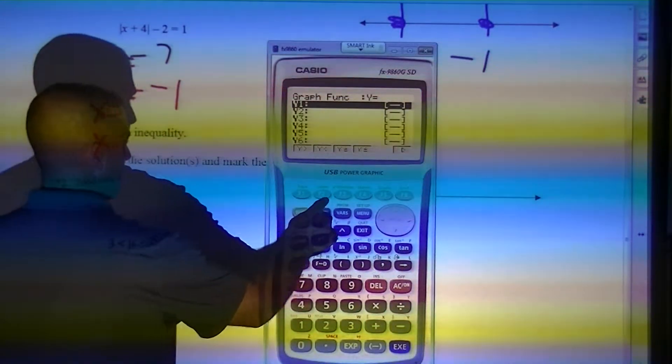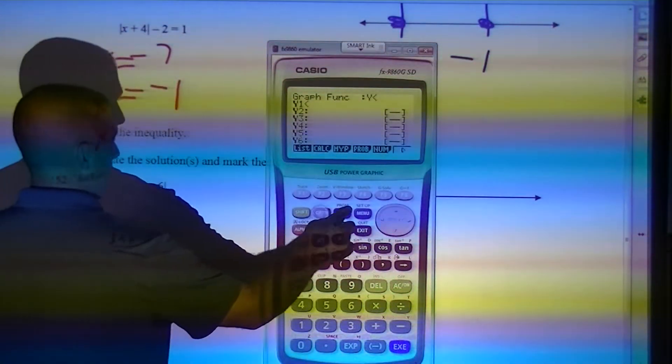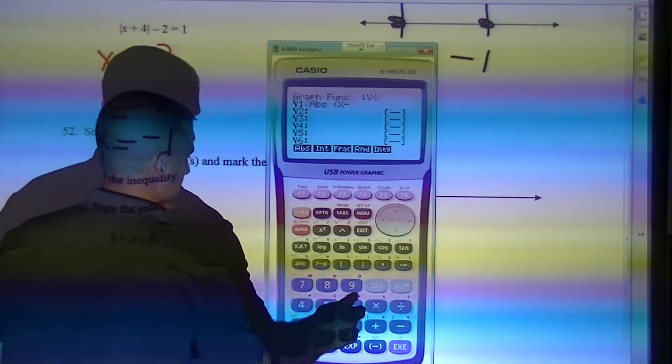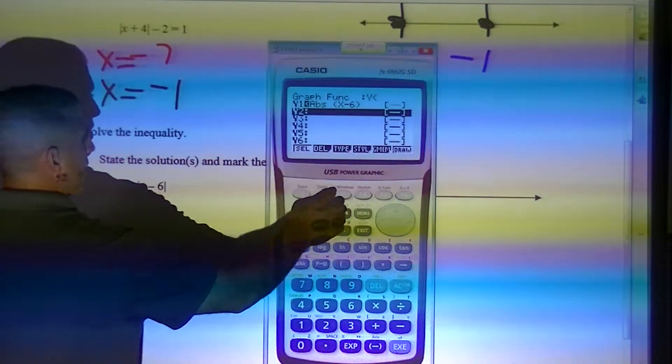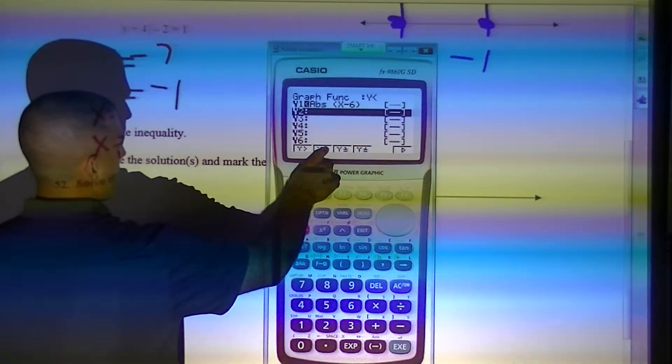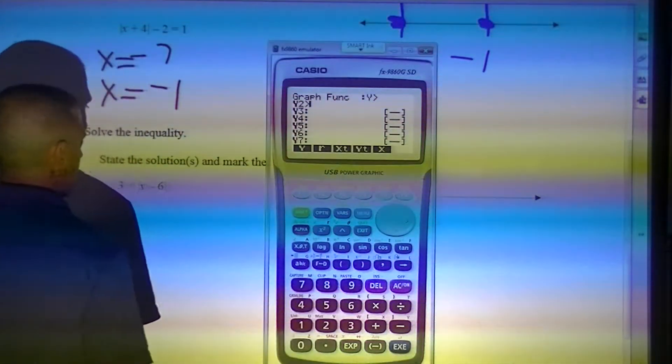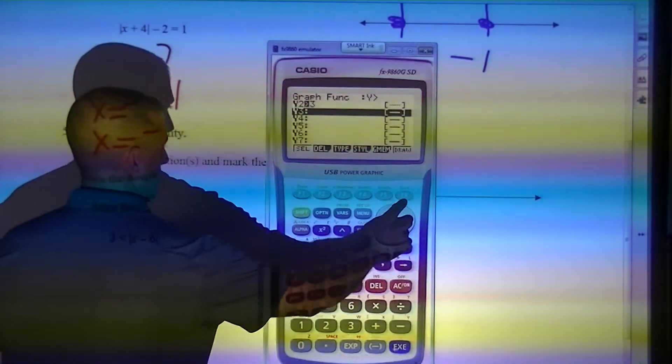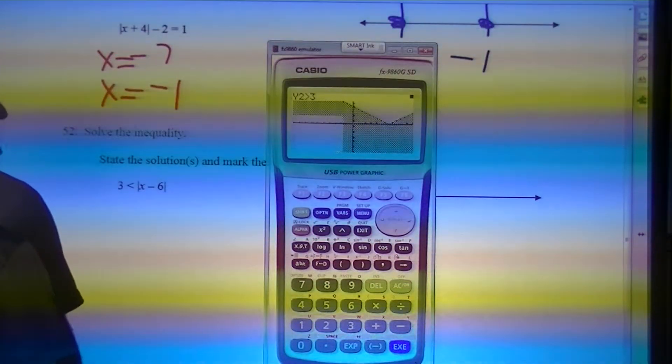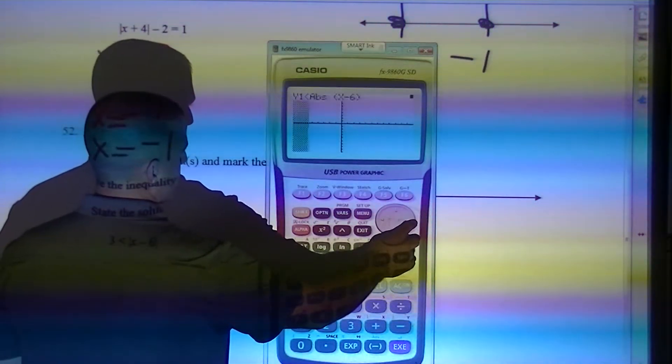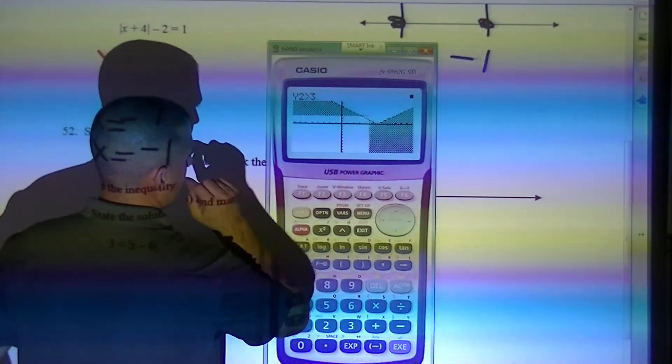Option, num, abs. x minus 6. I flipped the inequality around. So instead of going this way, it goes the other. And that's 3. And I'm going to have to move over here so I can see it all.